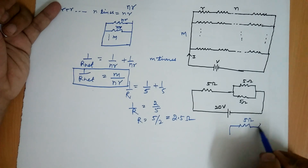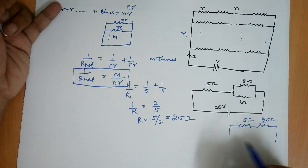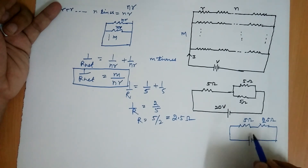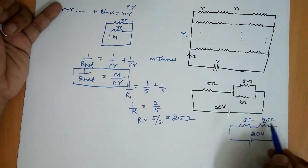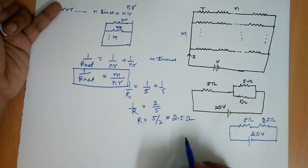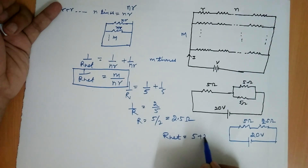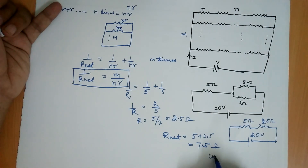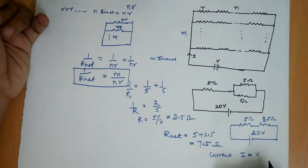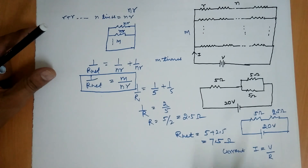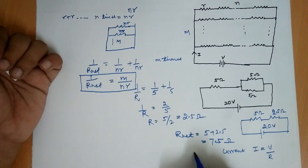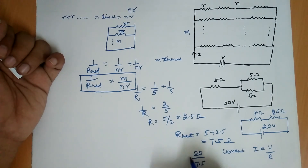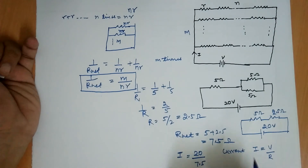Now the simplified circuit is 5 ohm connected with 2.5 ohm in series with a battery of 20 volts. The net resistance R_net equals 5 plus 2.5, which is 7.5 ohm. Now to find the current: I equals V by R, so I equals 20 by 7.5. This is the current flowing through the circuit.